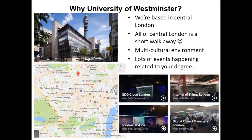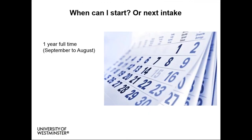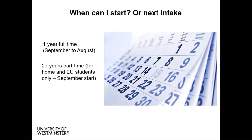When can you start the MSc Advanced Software Engineering? We do a one-year full-time degree which runs September to August, and a part-time degree for home and EU students which also has a September start and can be taken somewhere between two and five years. Both full-time and part-time have September starts. Unfortunately, we don't take any January applicants.